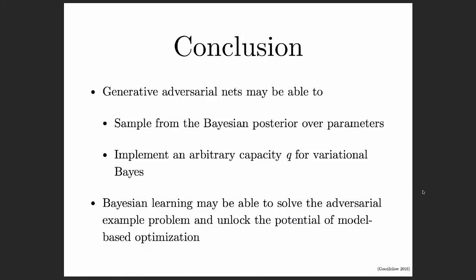In conclusion, I think generative adversarial nets may be able to sample from the Bayesian posterior over parameters and may give us a way to sample from arbitrarily high-capacity approximations to the posterior over latent variables in the variational Bayes framework. I also think Bayesian learning might be able to help us solve the adversarial example problem and unlock the true potential of model-based optimization with deep neural nets.